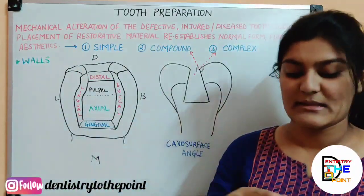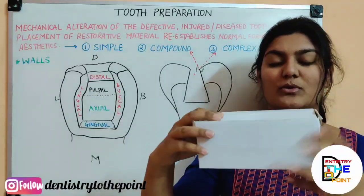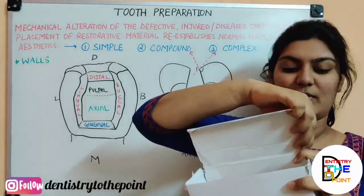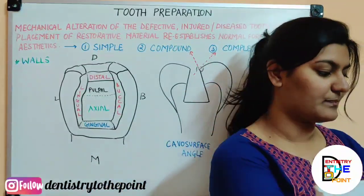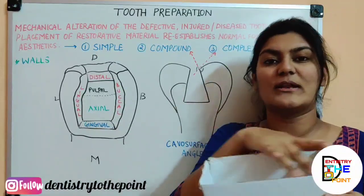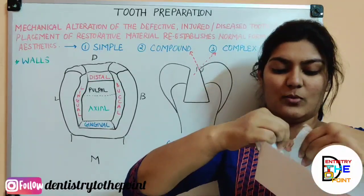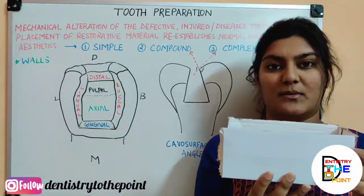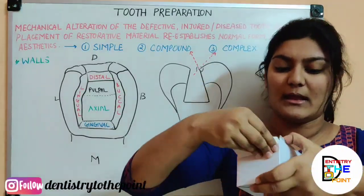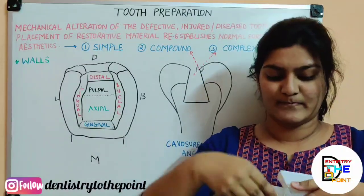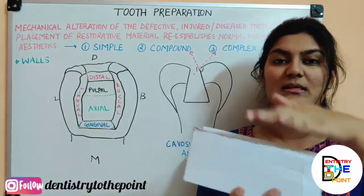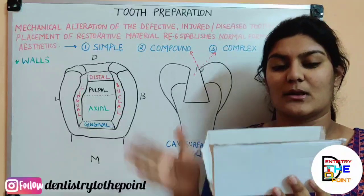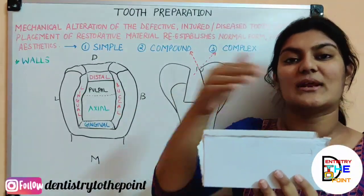For example, this is your tooth with its occlusal surface, mesial surface, distal surface, buccal surface and lingual surface. If only the occlusal surface is removed, that is a simple tooth preparation — only one surface involved. Now if the mesial surface is also removed, that becomes a compound tooth preparation — two surfaces involved. Now if the distal surface is also removed, three surfaces are involved: mesial, occlusal and distal. That is a complex tooth preparation. One surface: simple. Two surfaces: compound. Three or more surfaces: complex.